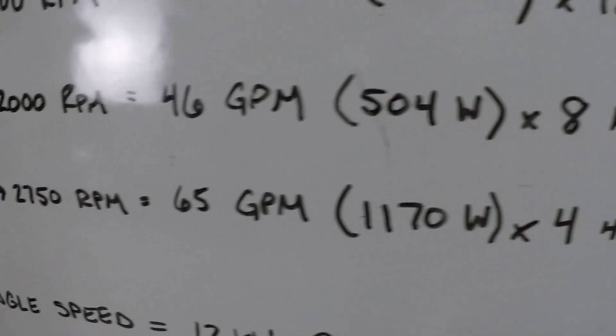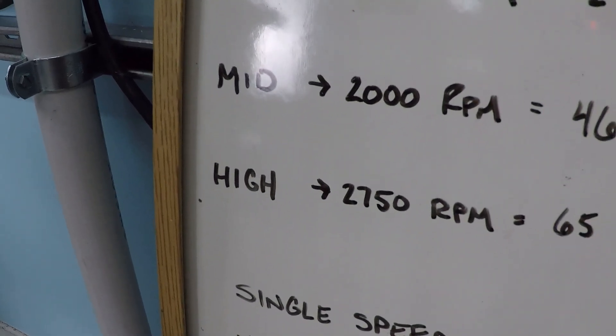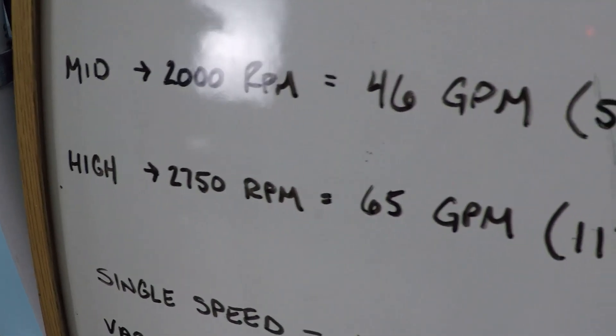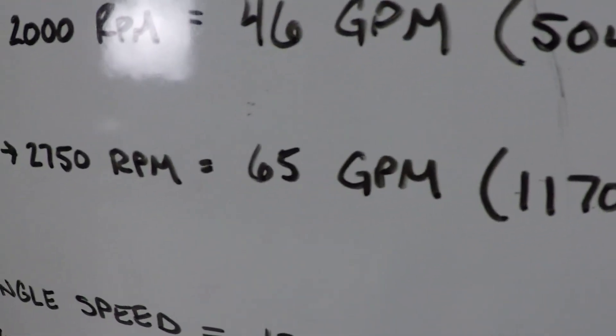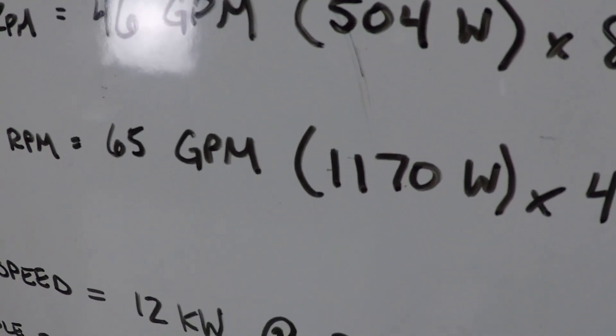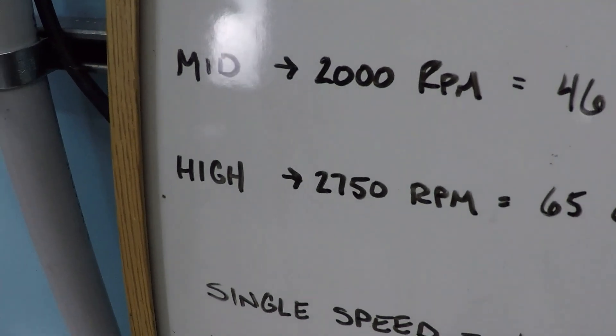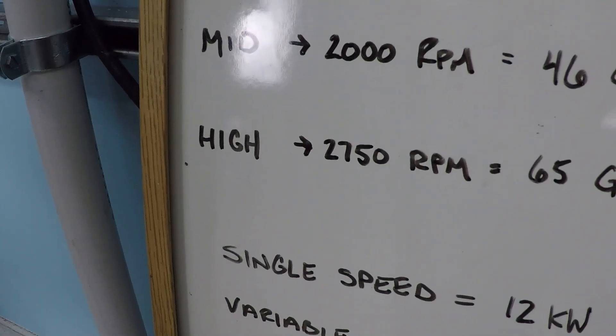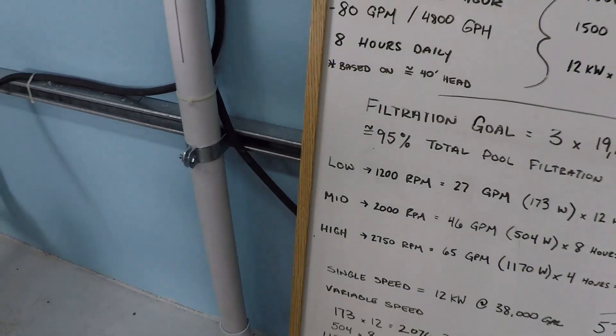Now let's take a look at a period of high speed operation. Notice it's not highest speed. Even a small reduction in RPM has a massive difference in the amount of power consumed. You might be looking at 10 gallons per minute difference here, but you might be looking at hundreds of watts difference in power consumption. There is an advantage to backing off the throttle just slightly. That's why for 4 hours here, we're going to be at 2750 RPM.